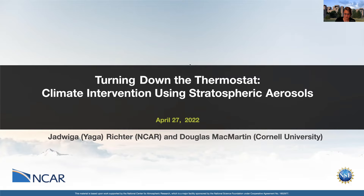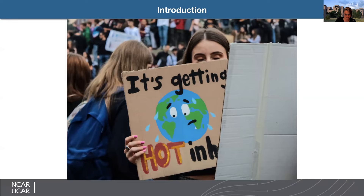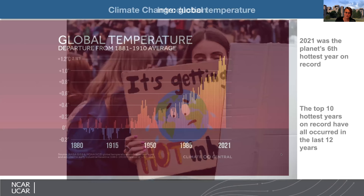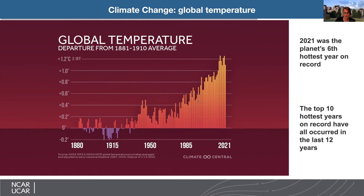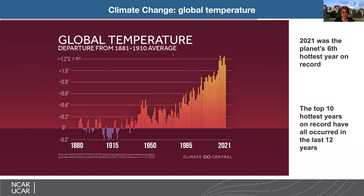I'll start by describing the motivation for this research, which is fundamentally simple: the earth is getting hotter and our climate is changing. What I have here is a picture of global temperature from 1880 to present day relative to the pre-industrial average of 1881 to 1910. Since about the 1920s, global mean temperature has been drastically increasing — especially since about 1970. 2021 was the planet's sixth hottest year on record, and the top 10 hottest years have all occurred in the last 12 years.